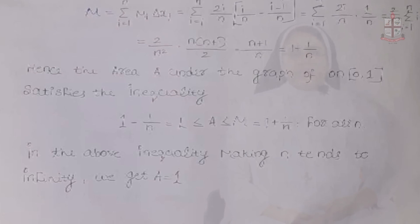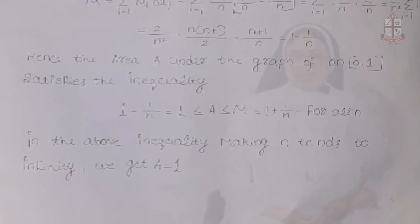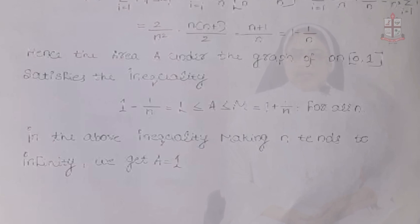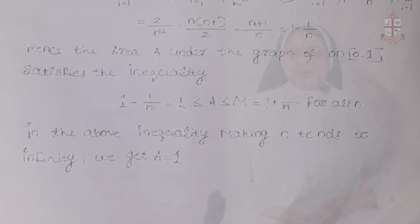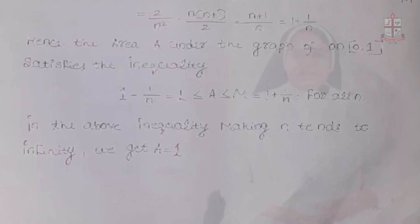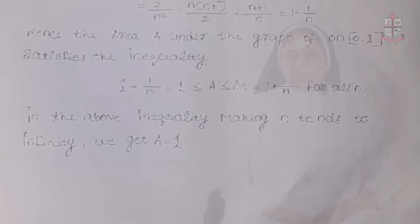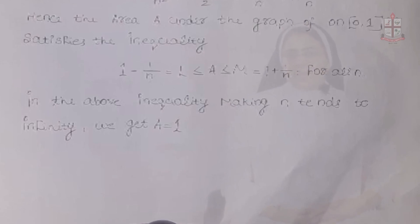The lower sum is 1 - 1/n and the upper sum is 1 + 1/n. The actual area A lies between them: 1 - 1/n = L ≤ A ≤ M = 1 + 1/n for all n. As n tends to infinity, 1/n tends to 0, so both 1 - 1/n and 1 + 1/n approach 1. Therefore the final area A = 1. Using this method, we can find the area of the given problem by making use of step functions.